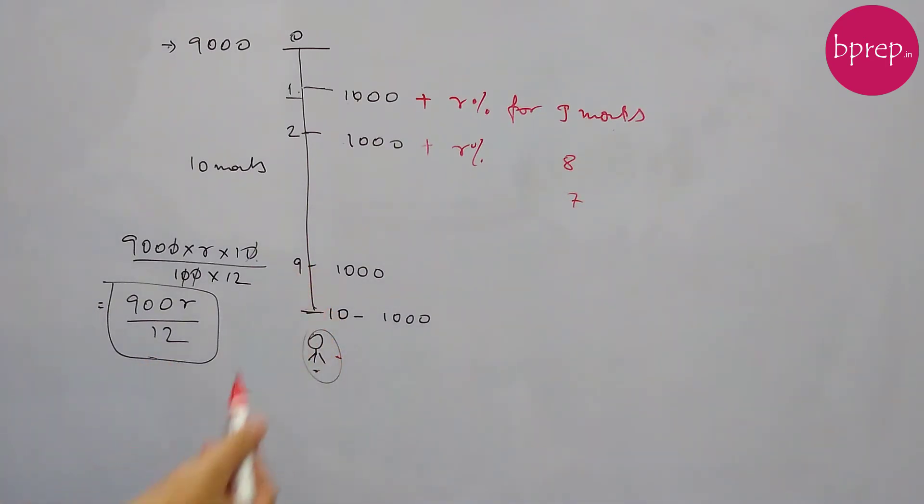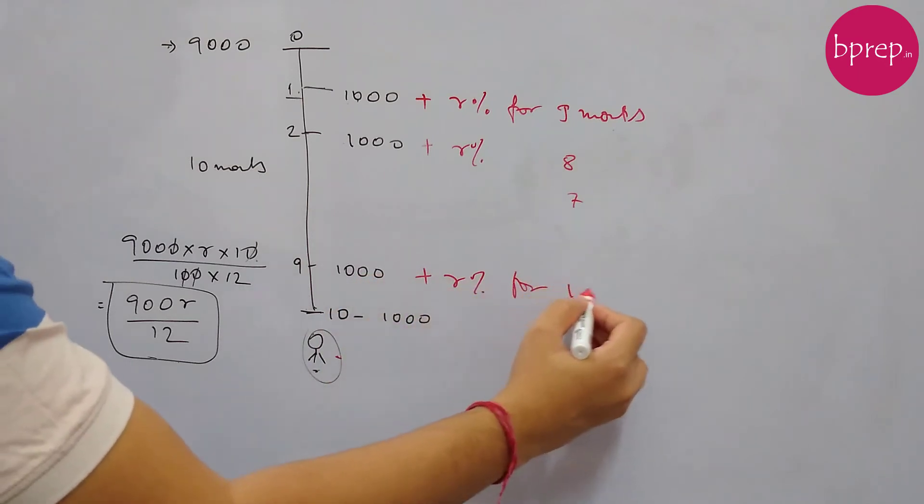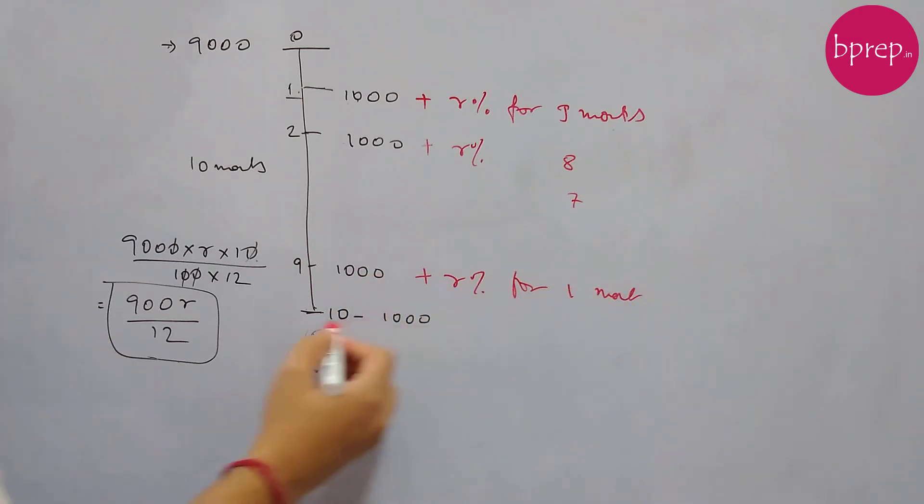So the current value of this 1000 is 1000 plus R% of 1000 for 8 months. And similarly things will follow. The third EMI will be 1000 plus R% for 7 months. Similarly this 9th EMI is 1000 plus R% of this 1000. We need to calculate it for 1 month - we are here and this was paid just 1 month back.